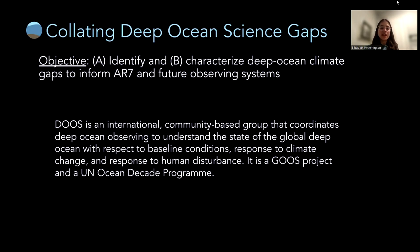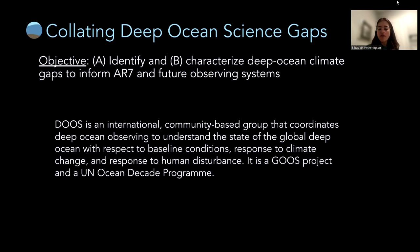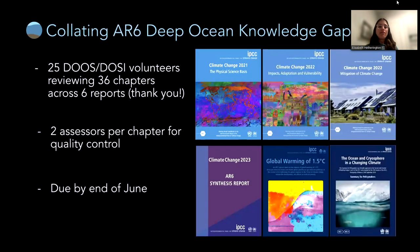Our primary objective was to identify and characterize deep ocean climate gaps to inform AR7 and future observing systems. I'm an early career researcher with DOOS — the Deep Ocean Observing Strategy — an international community-based group that coordinates deep ocean observing. DOOS is a UN Ocean Decade program and a GOOSE project. Everything in this project is specifically related to the deep ocean, which is defined roughly as 200 meters and deeper in the global ocean.